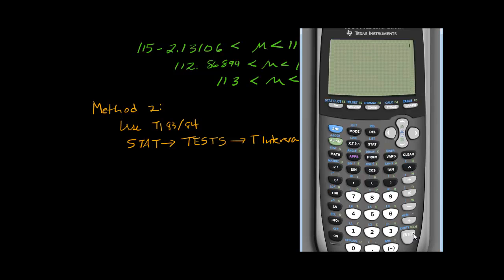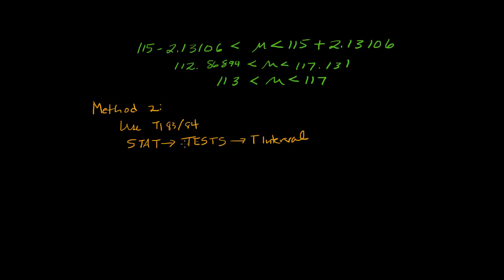And we'll calculate. So we get 112.87, 117.13. And now writing it in this format and rounding, following the rounding rule, where we round to the same number of decimal places as our sample mean, and we get the same results.